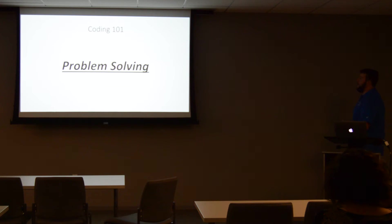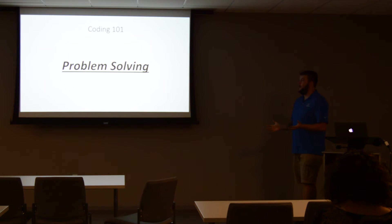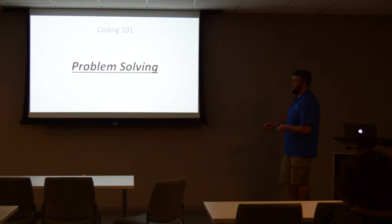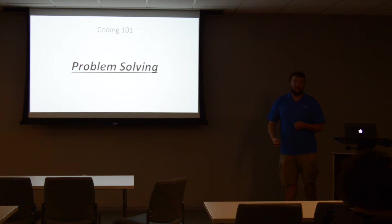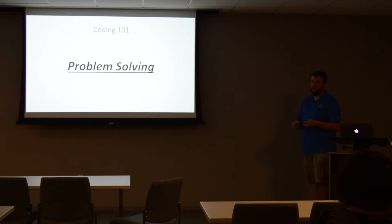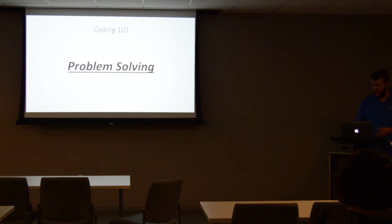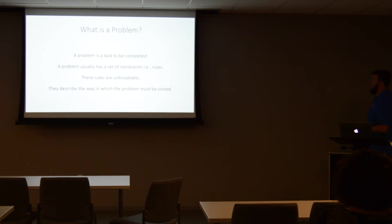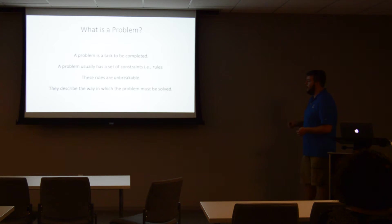Coding is problem solving. It is the act of figuring out what a problem is in the world, and then coming up with some kind of solution to solve that problem. The second part is expressing that solution in a programming language that the computer can understand. That's probably one of the more abstract things you need to learn first — am I good at problem solving? Can I solve a problem? First, let's talk about what a problem is. A problem has to be completed; it usually has a set of constraints — rules. These rules are unbreakable; they describe the way in which the problem must be solved.